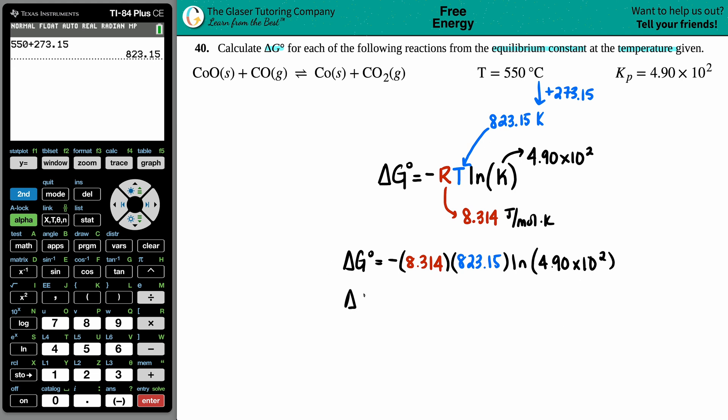That's exactly what I'm going to do. Delta G equals negative 8.314 times—I'm going to pull that number down, decreases the amount of error—and then I'm going to say times by the ln, that's the natural log, of 4.90.